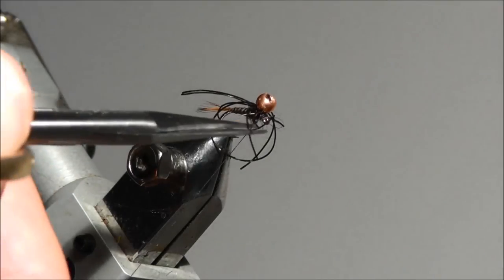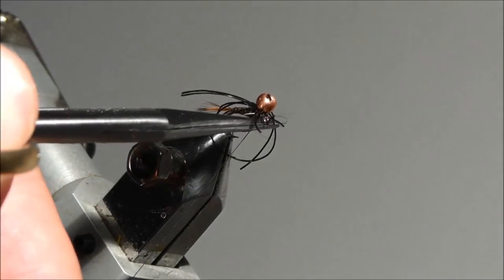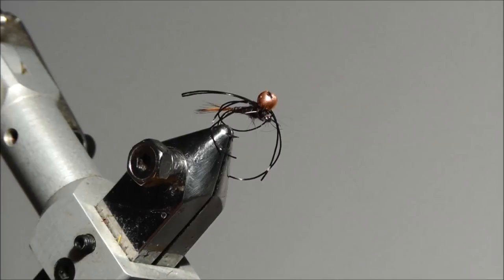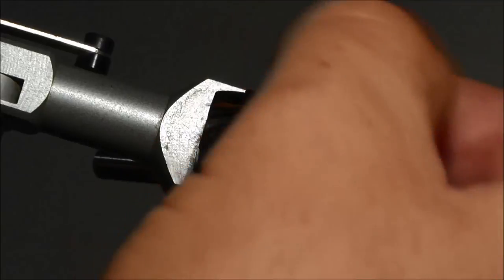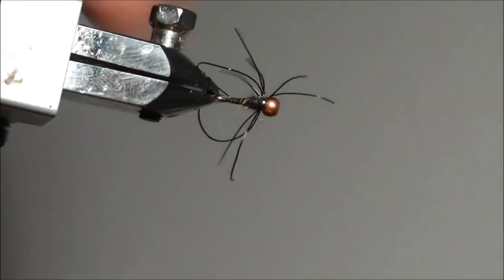The advantage of this fly is that the hook will be upside down in the water. And the chances to get snagged on the rock or on the weed are a bit less.